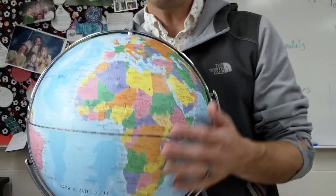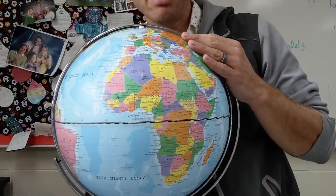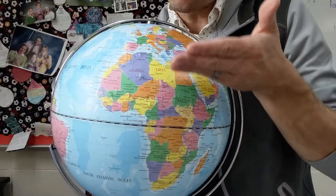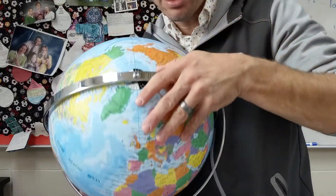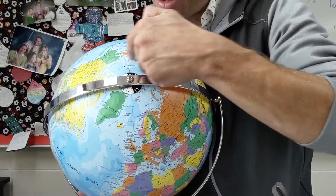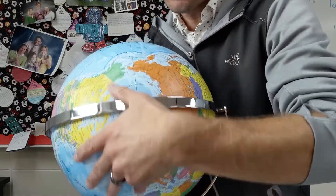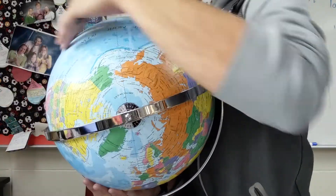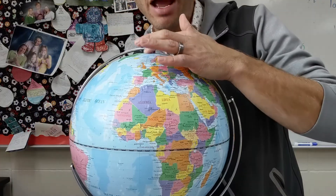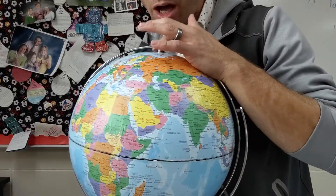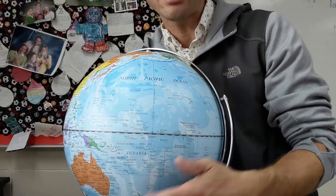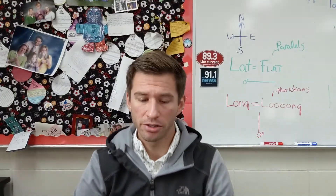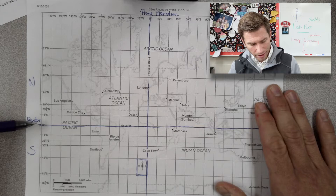Lines of latitude are called parallels because they're always flat. Here's our equator, and as we go north every line of latitude runs around the world and is flat. As you get closer to the north pole the circle gets smaller compared to the equator. Lines of longitude are called meridians because they all go from the north pole to the south pole — they're long. All of those meridians start at the north pole and head down to the south pole.